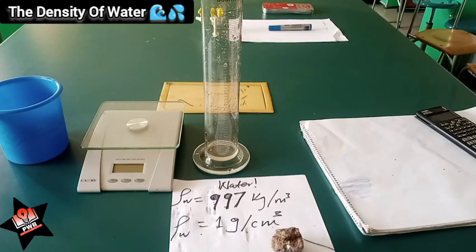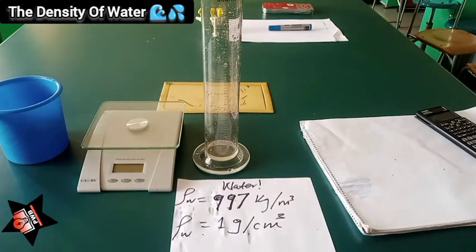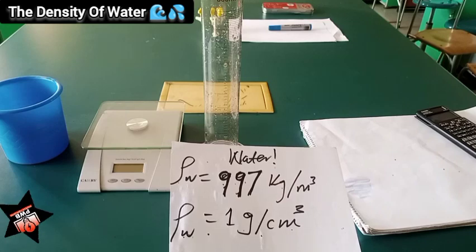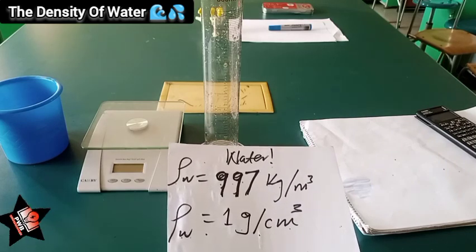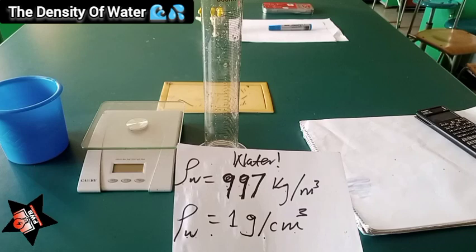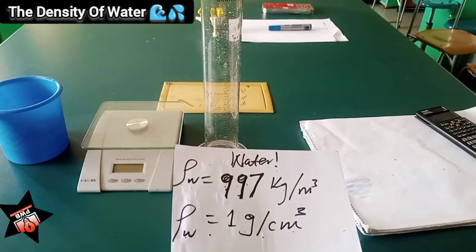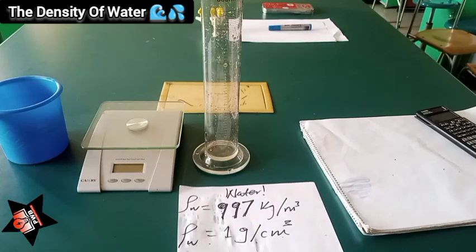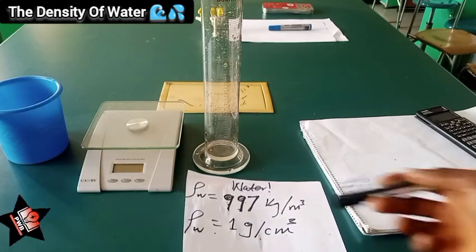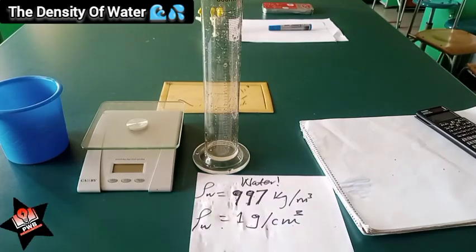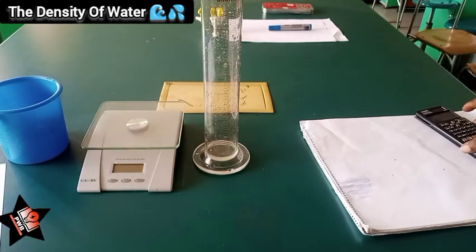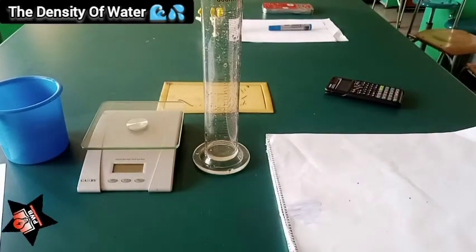First things first — this is the information I have from Google. Universally, the density of water in grams per cm³ is approximately 1 gram per cm³, and in kilograms per m³ you have 997 kg/m³. So let us verify through this experiment whether we can get an approximate or exact value of this.